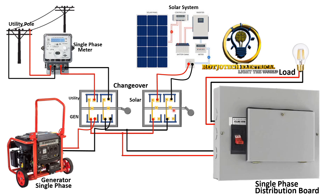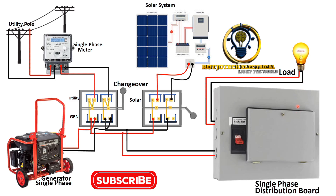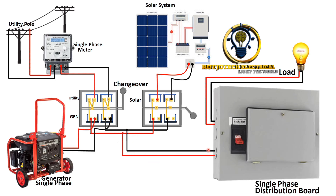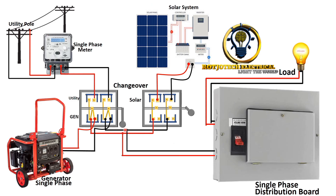Now we are going to see how the position of the changeover switches looks when switching to each power source. First, switching to utility — you can see the load is being powered by utility, and the generator and solar positions are free. Switching to generator — utility is free, solar is free. Now let's switch to the solar system.